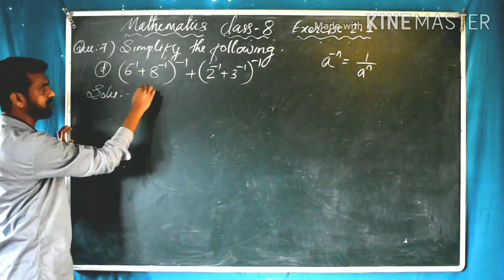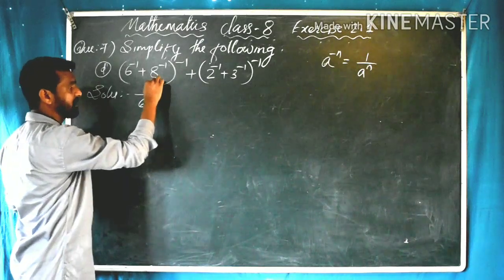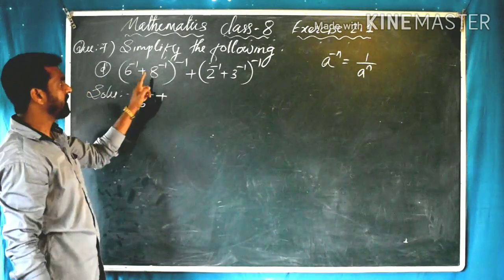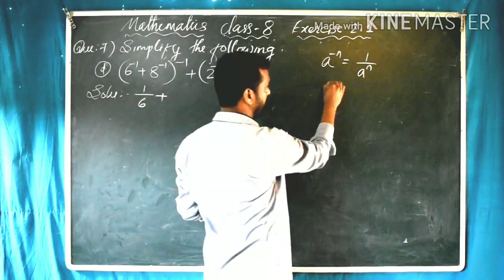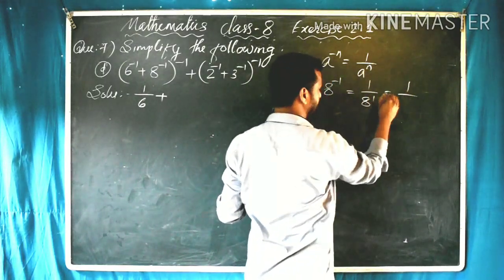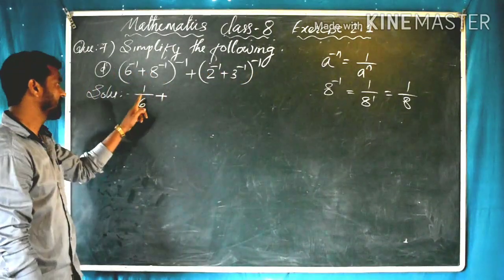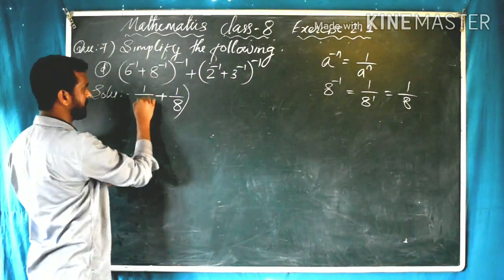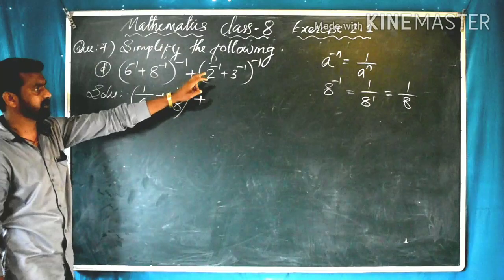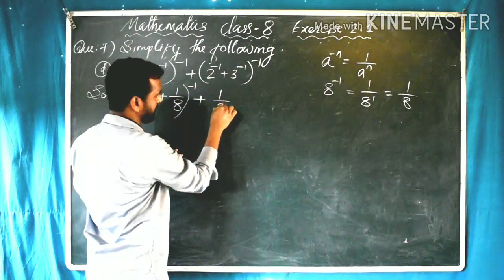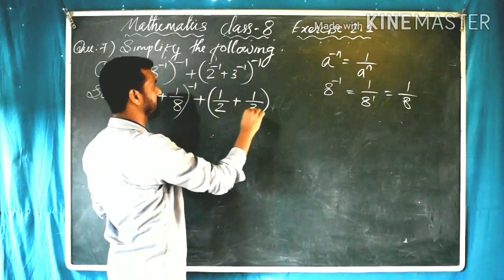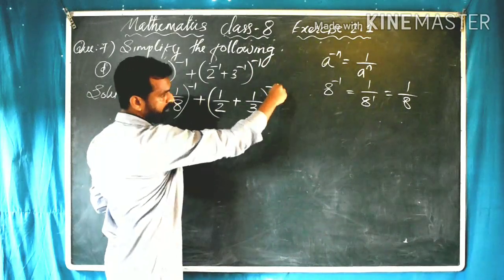Applying the formula: 6 raised to minus 1 equals 1 by 6 raised to 1, which is simply 1/6. And 8 raised to minus 1 equals 1 by 8 raised to 1, which is 1/8. The whole bracket is raised to minus 1. Similarly, 2 raised to minus 1 equals 1/2, and 3 raised to minus 1 equals 1/3, with the whole bracket raised to minus 1.